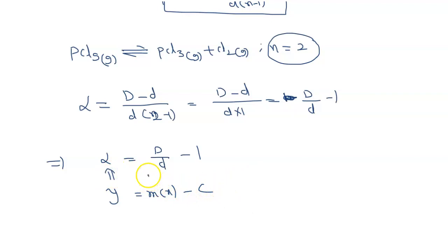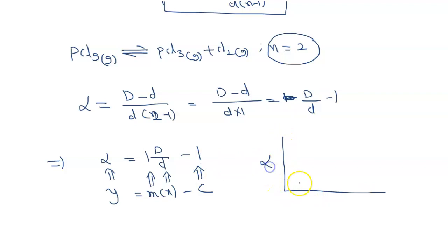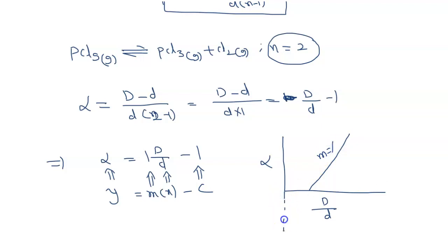This is in the form y equals mx minus c, where y corresponds to alpha, m corresponds to 1, x corresponds to capital D divided by small d, and c corresponds to 1. You can plot a graph with alpha on the y-axis and D/d on the x-axis. The slope m equals 1, and if you extrapolate the graph, the y-intercept will be negative, equal to minus 1.